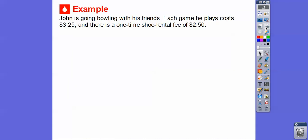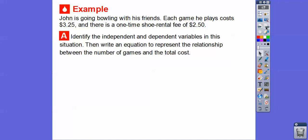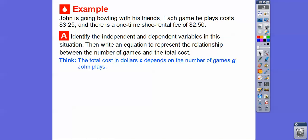Here's another one. John is going bowling with his friends. Each game costs $3.25, and there's a one-time shoe rental fee of $2.50. The $2.50 won't change, but the number of games will change. Identify the independent and dependent variables, and write an equation to represent the relationship between the number of games and the total cost. The total cost c depends on the number of games John plays.